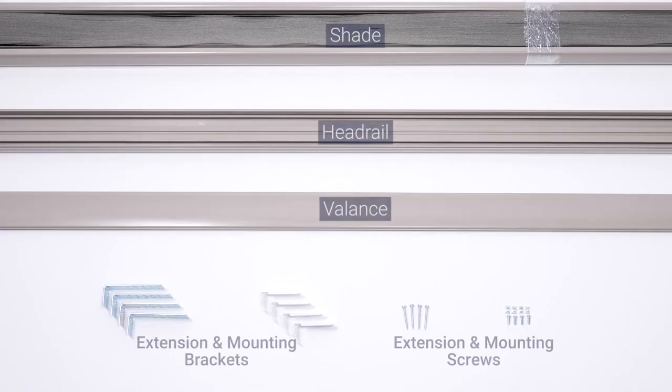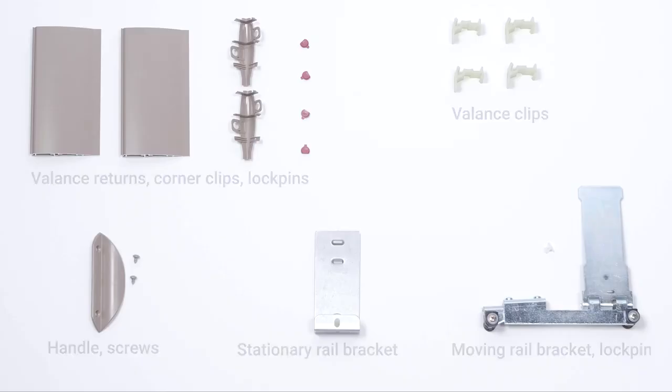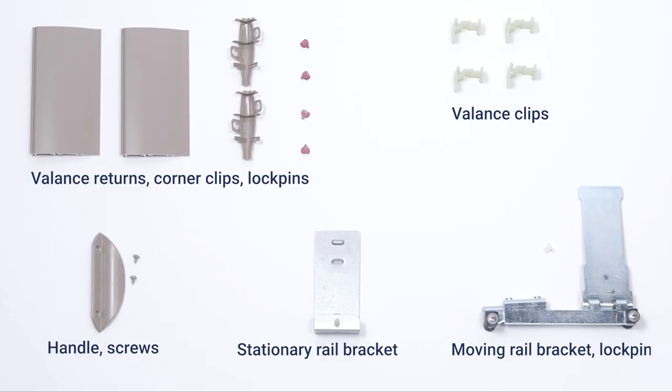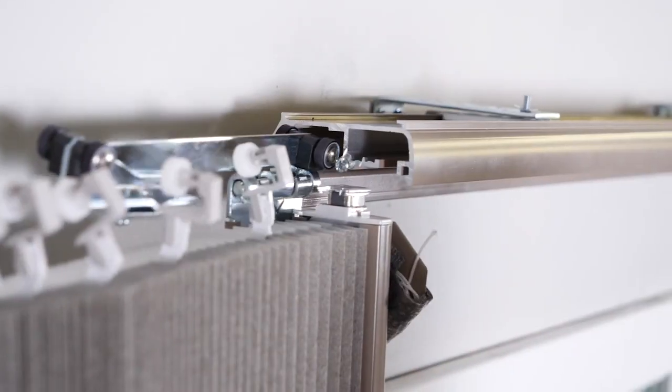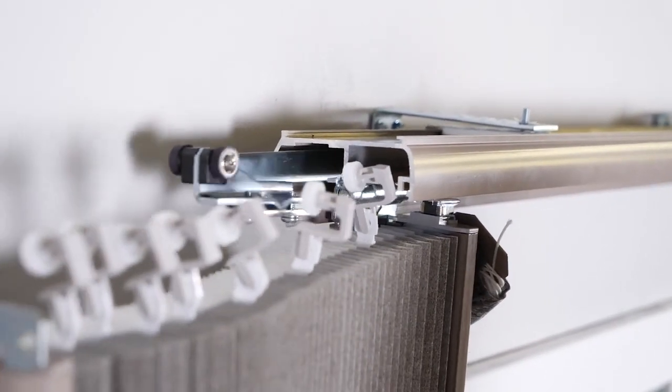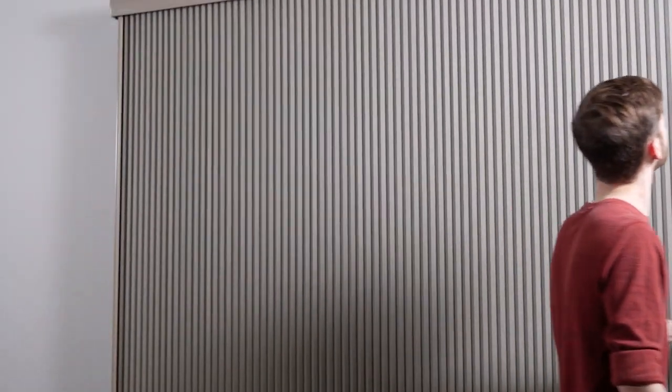Depending on the shade you ordered, the pieces or parts you have may be a little different, but that's okay. You'll follow basically the same steps I'll go through here to hang them. Just be sure to check the instructions that came with your product before you start. I'm installing a left stack vertical cellular shade as an outside mount. If your shade stacks on the right, the installation will be the same, but mirrored.